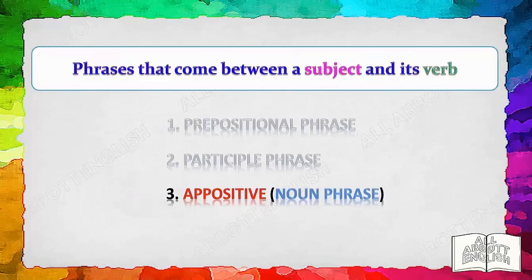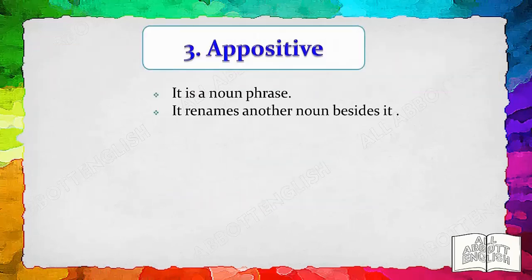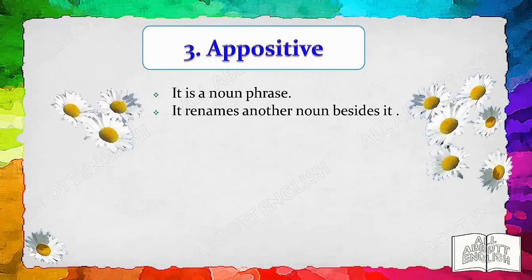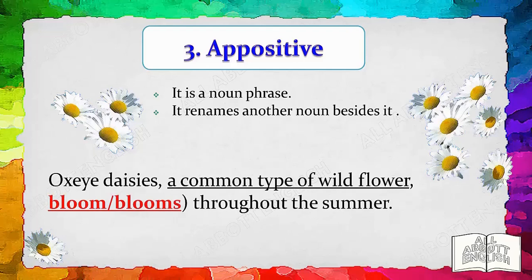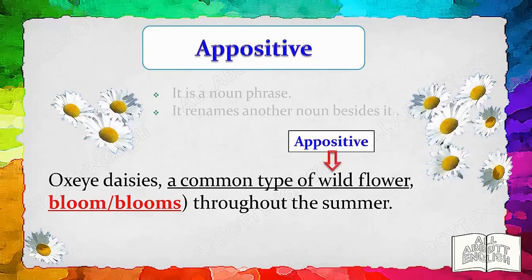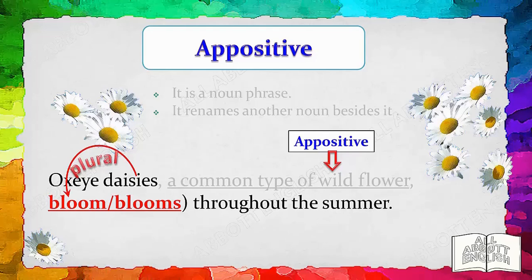The next group of words that often comes between a subject and a verb is the appositive — a noun or noun phrase that renames another noun right beside it. Getting a subject and a verb to agree can be tricky when they are separated by many other words. One way is to identify the subject and the verb first, then read the sentence without the extra words to decide if the subject is singular or plural. For example, 'Oxeye daisies, a common type of wildflower, bloom throughout the summer.' By mentally removing the appositive 'a common type of wildflower,' we can see that 'oxeye daisies' is the plural subject — hence it takes the plural verb 'bloom.'